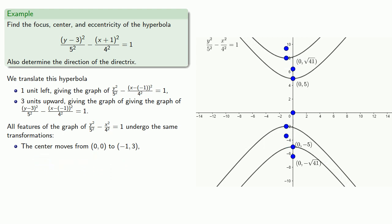The vertices move from (0,5) and (0,-5) one unit left and three units upward.